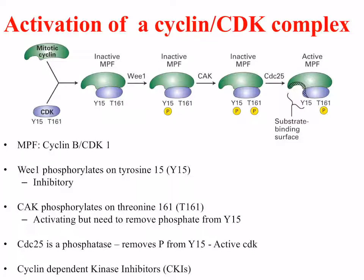The next step involves an enzyme called CAK, which phosphorylates threonine-161 — this is activating, but it needs to remove the phosphate from tyrosine-15 first. The third event needed is a phosphatase called CDC-25, which removes the phosphate group from tyrosine-15 in order to activate the cyclin-dependent kinase complex. Once active, it is able to act upon its substrates.